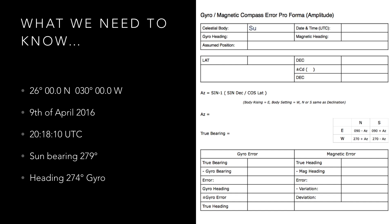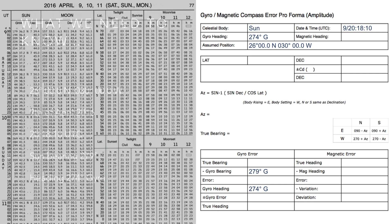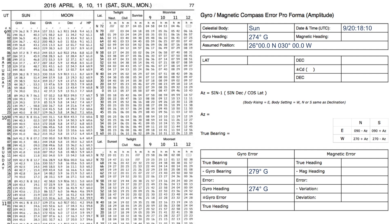You will notice that we only require the latitude and declination for an amplitude calculation. The declination we obtain from the daily pages of the nautical almanac. Looking up 20 hundred hours on the 9th of April we obtain the declination as North 7 degrees 57.9.